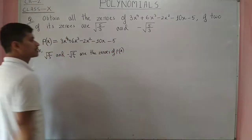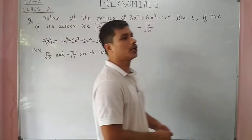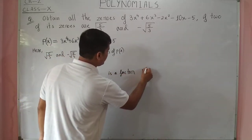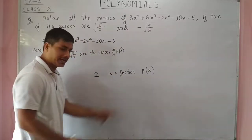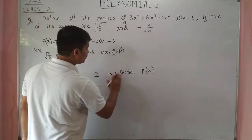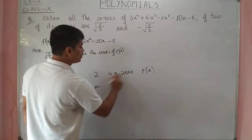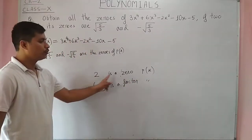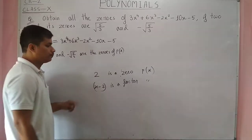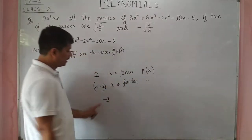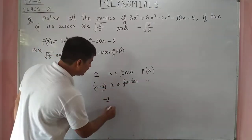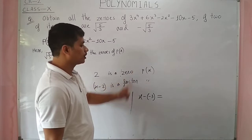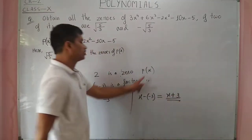These are zeros of p(x). In class we already learned that if 2 is a zero of p(x), then (x - 2) is a factor of p(x). Similarly, if -3 is a zero of p(x), then x minus (-3), that means (x + 3), is a factor of p(x).